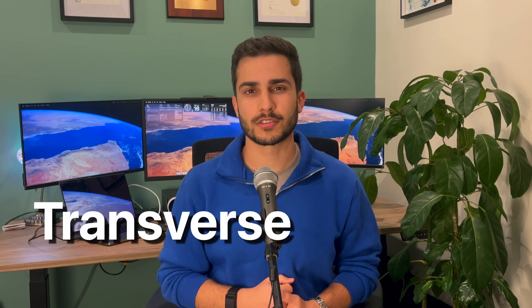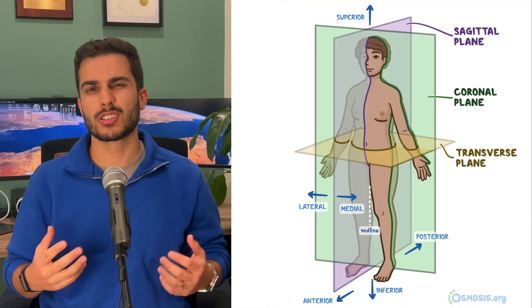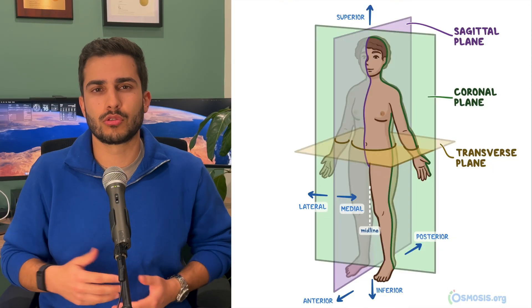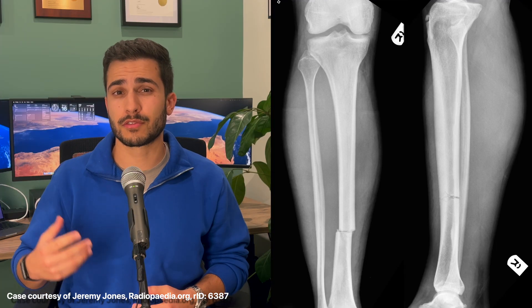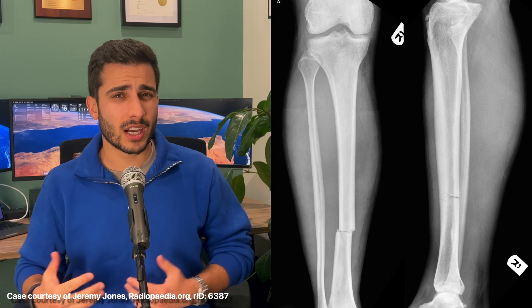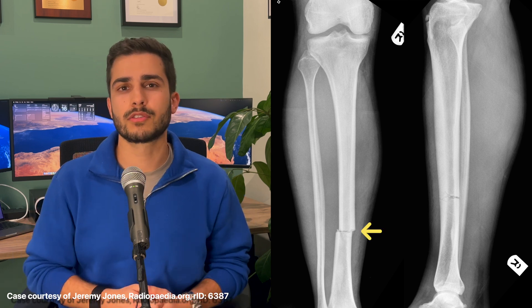Let's start with the transverse fracture. The word transverse refers to one of the three different anatomical planes, usually called axial but sometimes also called horizontal or transverse plane — basically describing a cut that divides the anatomy into superior and inferior parts. So a transverse fracture is characterised by a transverse line through the bone. Here's an example where the patient had a football injury and you can see the line going right through the distal half of the tibia.